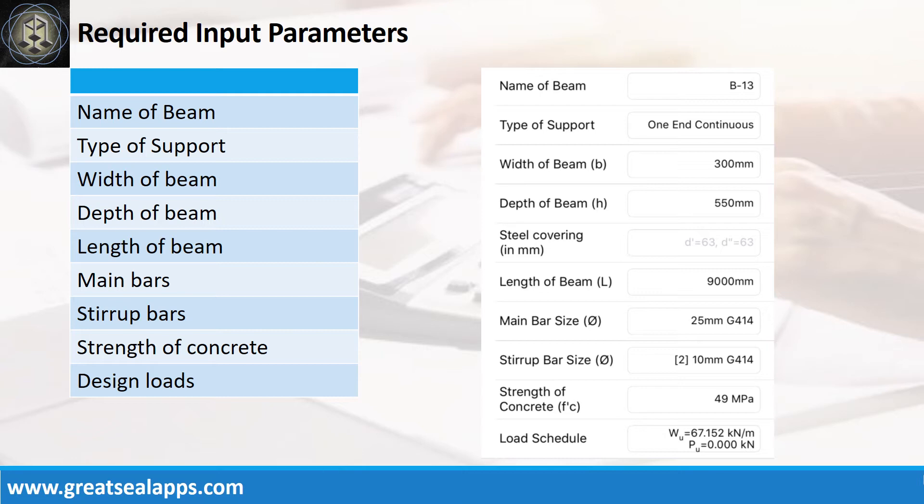Main bars, 25 mm bar at grade 414. Stirrup bars, 10 mm bar at grade 414. Strength of concrete, 49 MPa. And factored uniform load, 67.152 kN per meter.